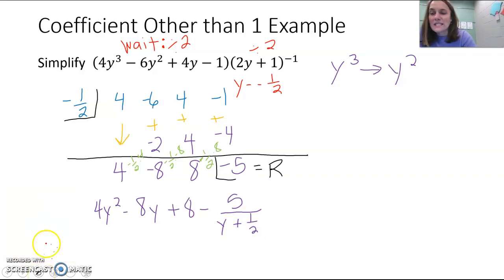But, what we didn't do, what we said we were going to wait to do, was divide by 2. So now we have to take all of this and divide by 2. So we're going to take 4y squared and divide by 2, and that gives us 2y squared. Take negative 8y and divide by 2, that gives us negative 4y. Take 8 divided by 2, and that gives us 4.